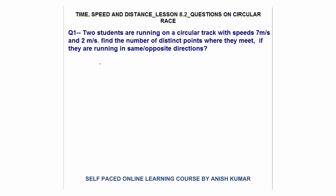Hello, this is Time Speed and Distance lesson 8.2. In this I will discuss questions on circular races. The first question is that two students are running on a circular track with a speed of 7 meters per second and 2 meters per second. Find the number of distinct points where they meet if they are running in the same or opposite direction.